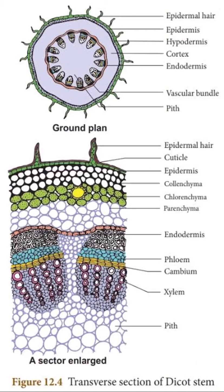The first-formed elements of phloem are known as protophloem towards the outer side and metaphloem towards the inner side. In bicollateral bundles of stems of members of the family Cucurbitaceae, internal phloem is developed in a centrifugal manner, that is, from center to periphery. If xylem is developed in both directions — centrifugal and centripetal — this stage is called the mesarch stage.